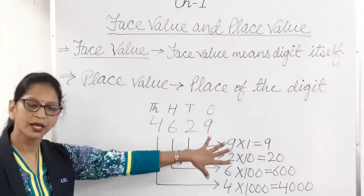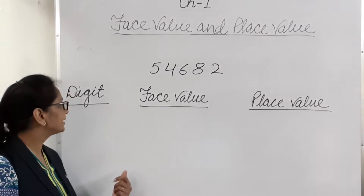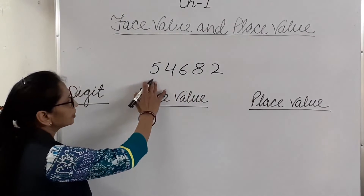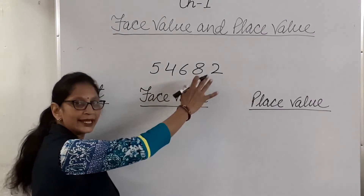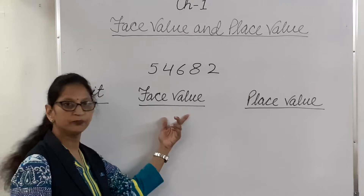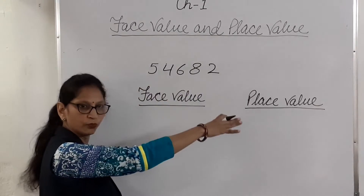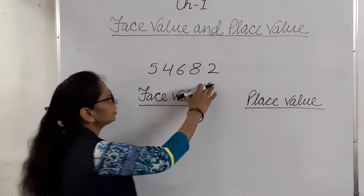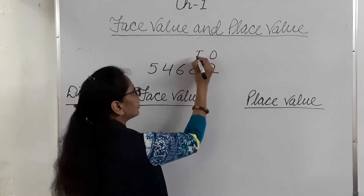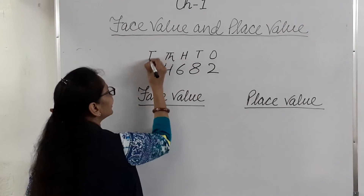Place value means the place of the digit — where the digit is put. Now let us see another example of face value and place value together. We have the number 54682. To find out the place value, first we have to identify the places. So 2 is in the ones place, 8 is in the tens place, 6 is in the hundreds place, 4 is in the thousands place, and 5 is in the ten thousands place.